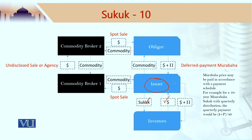Of course, the issuer is not looking for money — the money is actually needed by the obligor, this corporation that is looking for funds. Now, the issuer cannot give the cash directly to the obligor. In order to transfer the cash, the issuer would enter into a commodity murabaha transaction, the details of which you have already learned in a previous module. For commodity murabaha, we need commodity broker 1 and commodity broker 2. The issuer would buy a commodity on spot from commodity broker 1 for a price of dollar X, using the sukuk proceeds.